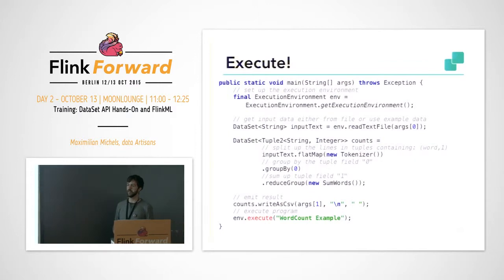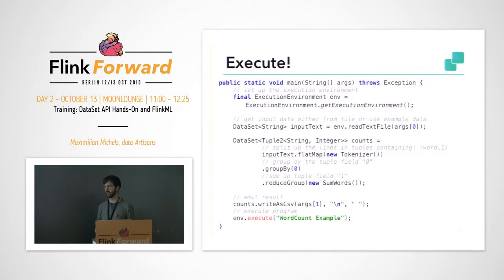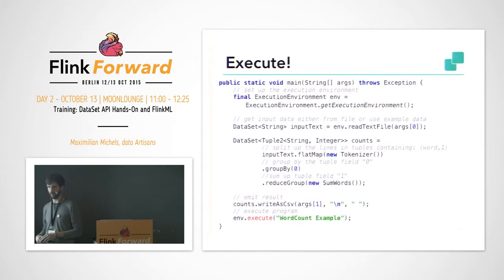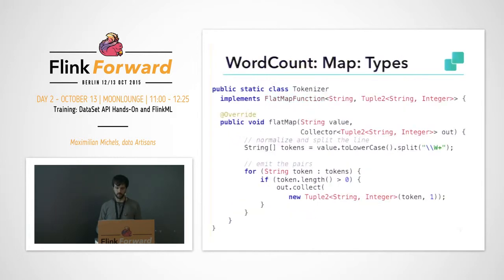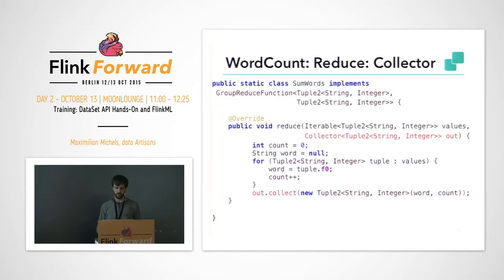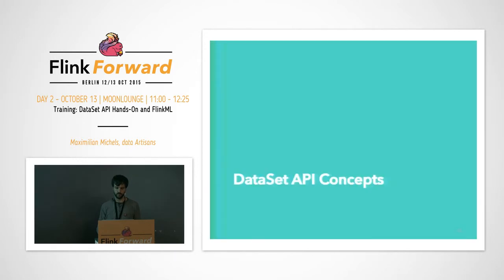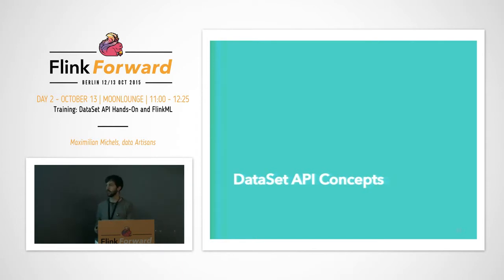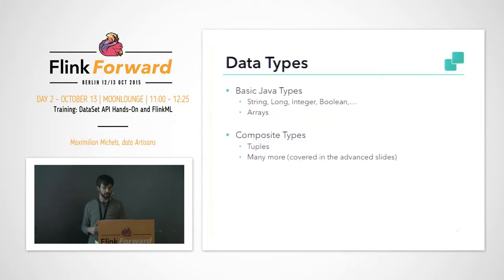Flink is able to partition the file into many more different parts — just making sure that all the parts are received by some worker. Now that we took a look at the example, we might want to look at some further concepts a bit more systematically. We mentioned data types.